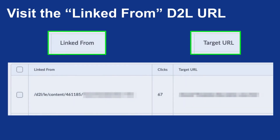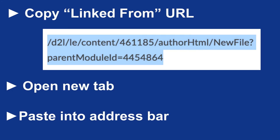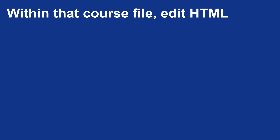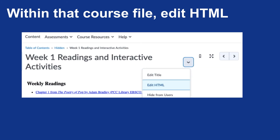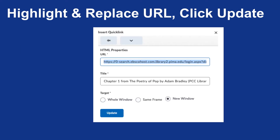You'll be visiting the linked-from item, copying and pasting that URL into your browser. Open a new tab, paste it into the address bar, and visit that specific course file. Once inside the course file, click on Edit HTML by finding the downward-facing chevron or context menu, clicking on that, then selecting Edit HTML. When you click Edit HTML, it'll go into the text editor mode, and you'll be able to select the hyperlinked text and click on the chain-link icon. The first URL shown is the link you would be replacing with the updated link.